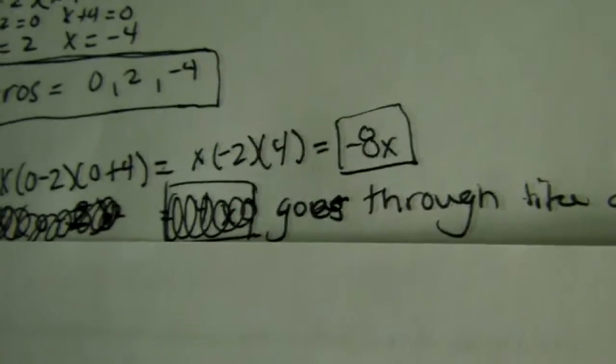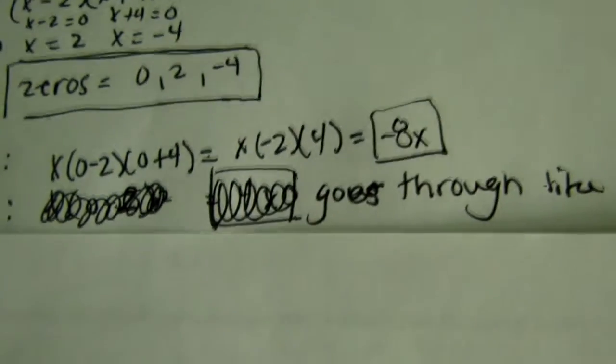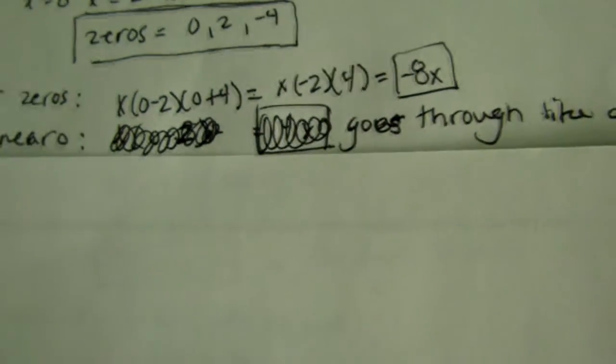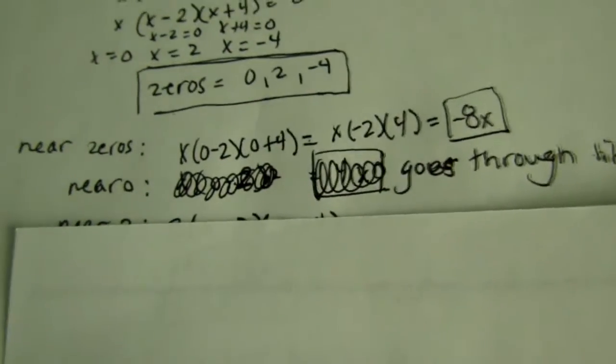It goes through the line, like a line, because it is an odd multiplicity. So, 1 multiplicity, instead of like a squared, which would be even, and it would bounce.